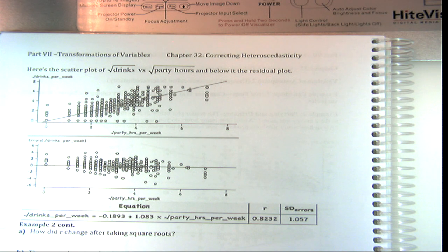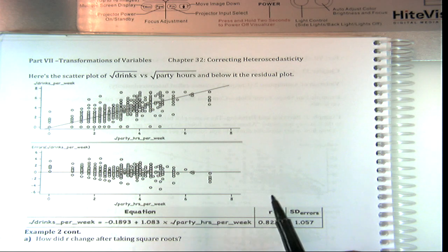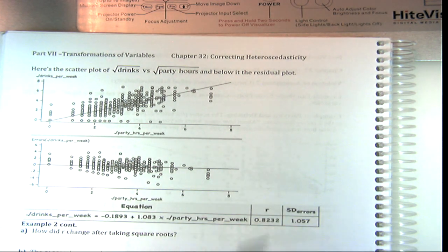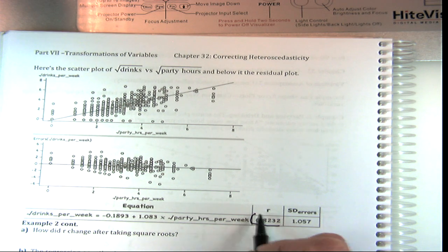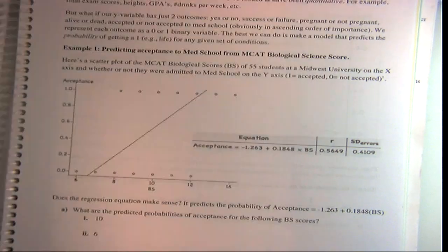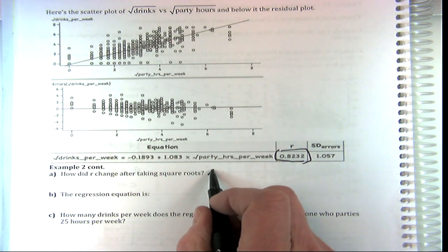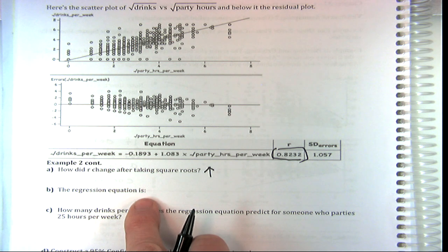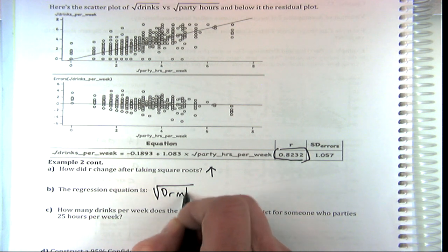Here's the scatter plot if we square root both sides — it gives us a better fit. It's still not really fully fixed, but it's somewhat better — not so fan-shaped. There are still some problems with it. The regression equation is: the square root of drinks equals negative 0.1893 plus 1.083 times the square root of party hours. We do have a better R compared to before — the fit improved and R went up.